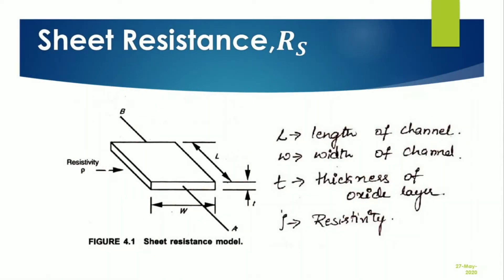Firstly we will study what is sheet resistance. Let me take a layer of material — it can be poly, diffusion, a channel, or metal. It can be a semiconducting material or any material used in a fabrication process. This material has a length of L, a width of W, and a thickness of T. The resistivity of the material is given as rho.